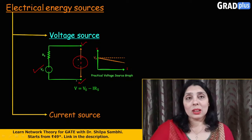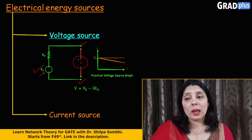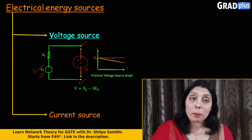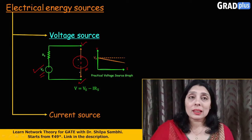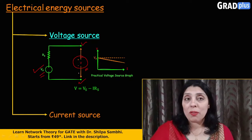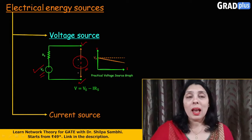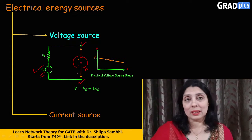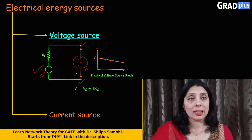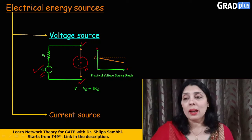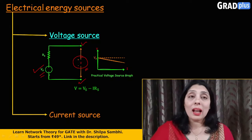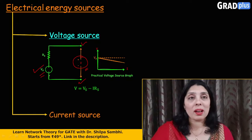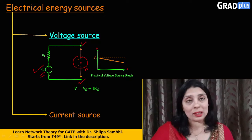Now, in an ideal case, what will happen? This Vs should come across these two terminals. But what happens basically, that there is some resistance which is offered by the circuit. And there are two categories which provide this resistance. So, the first resistance is offered by this voltage source itself. And how this voltage source is providing this resistance? Because of the components with which it has been constructed.